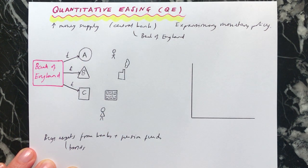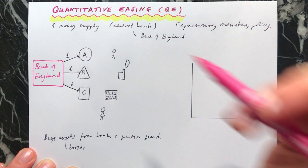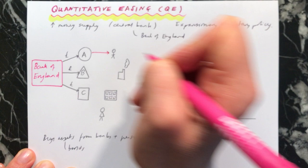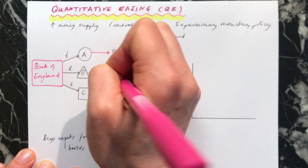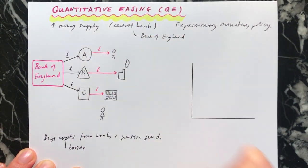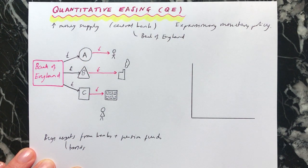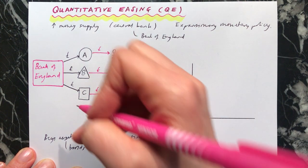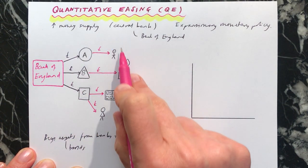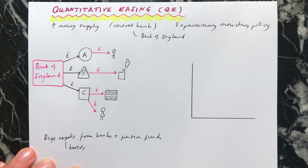So money goes into them. Then the idea, if it works, is that these institutions will then lend money — they'll make more loans to individuals and to businesses. In this way, more money will enter the system. Also, for the pension funds, because they now have more money, they're more likely to buy shares. In general terms, if the quantitative easing works, the money flows from the Bank of England into the economy, increasing the money supply by buying these assets from the banks and the pension funds.